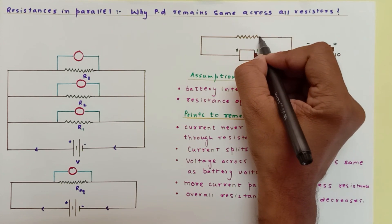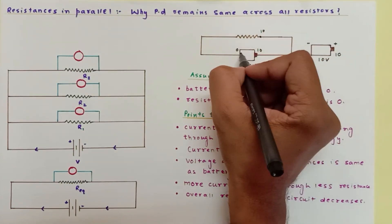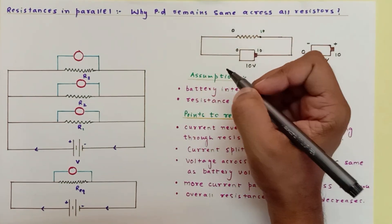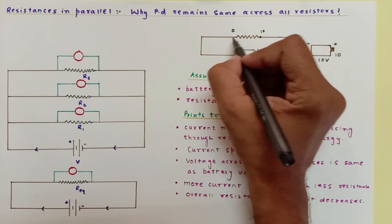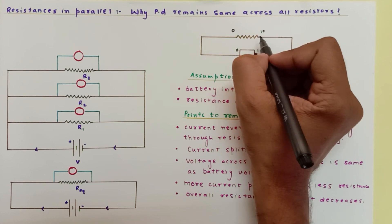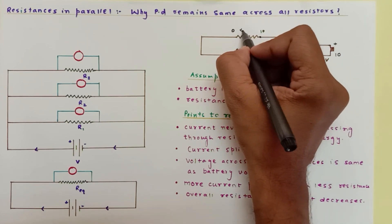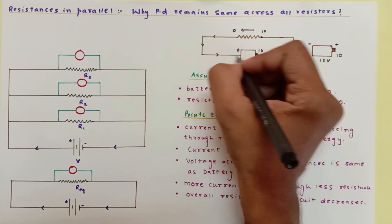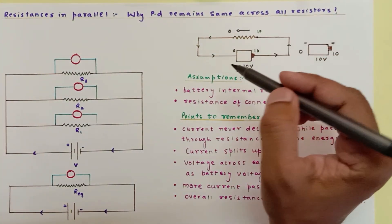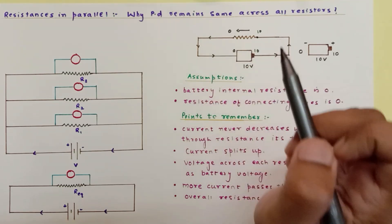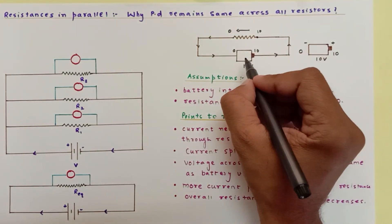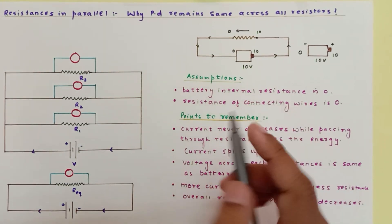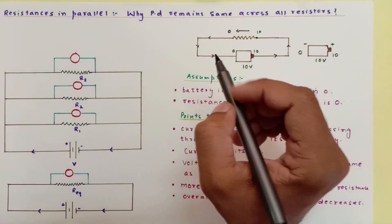This 10-volt battery is connected here, so this terminal is at 10 volt and this terminal is at 0 volt. That means the potential difference across the resistance is 10 volts, and current always moves from high potential to low potential. People have a misconception that current decreases when it passes through a resistor — that is not true. Whatever current comes out, the same current must come back into the battery.